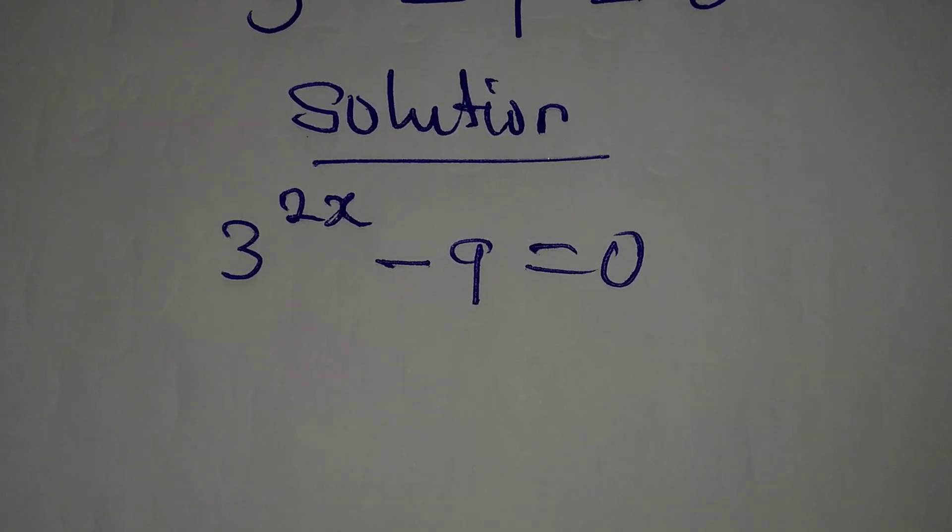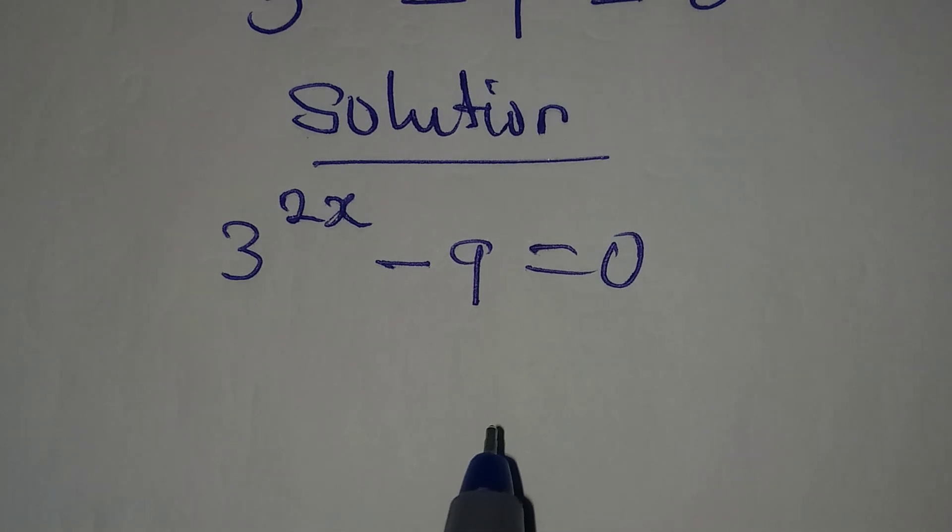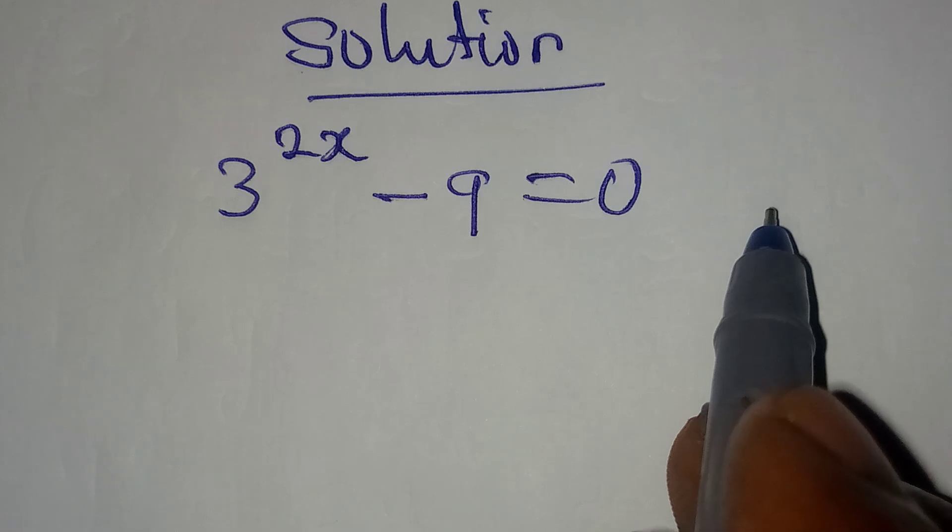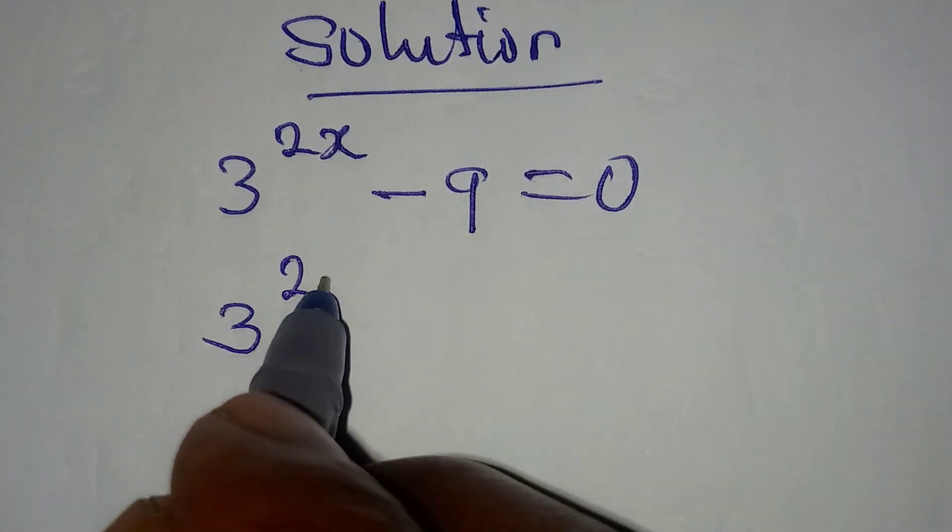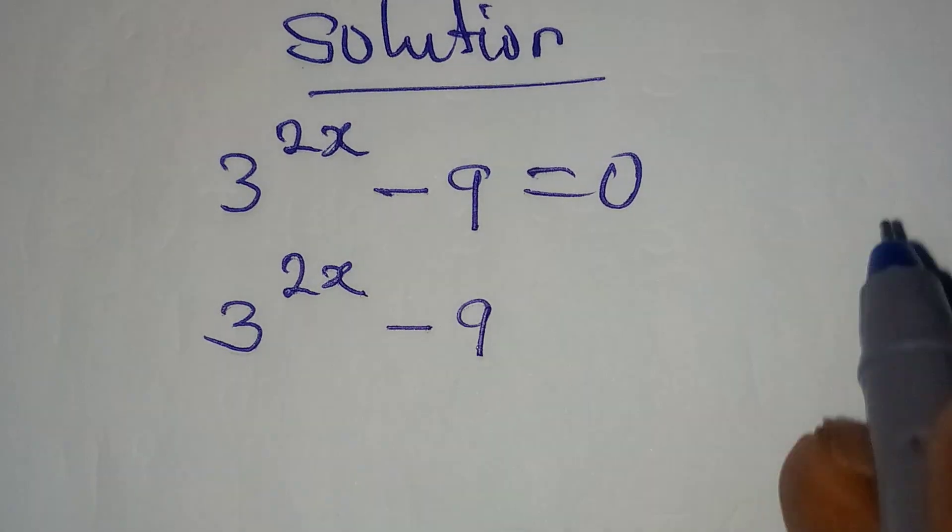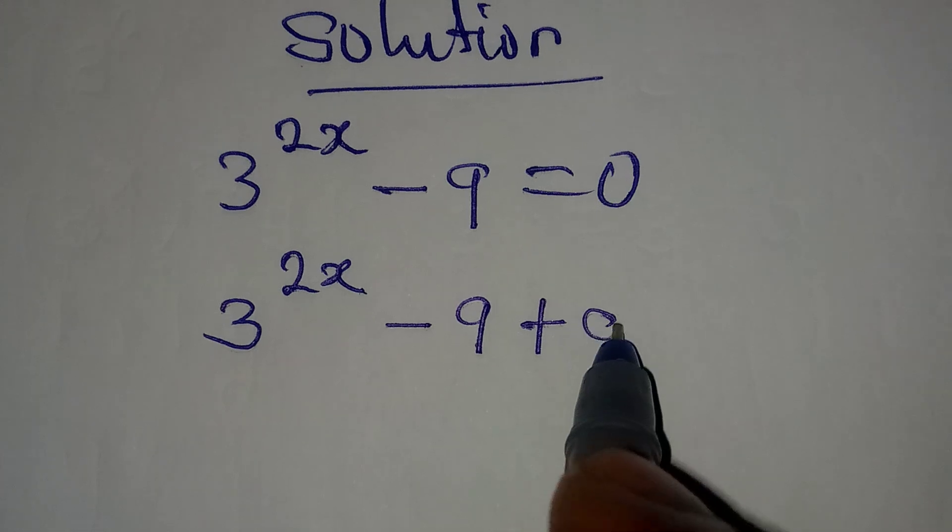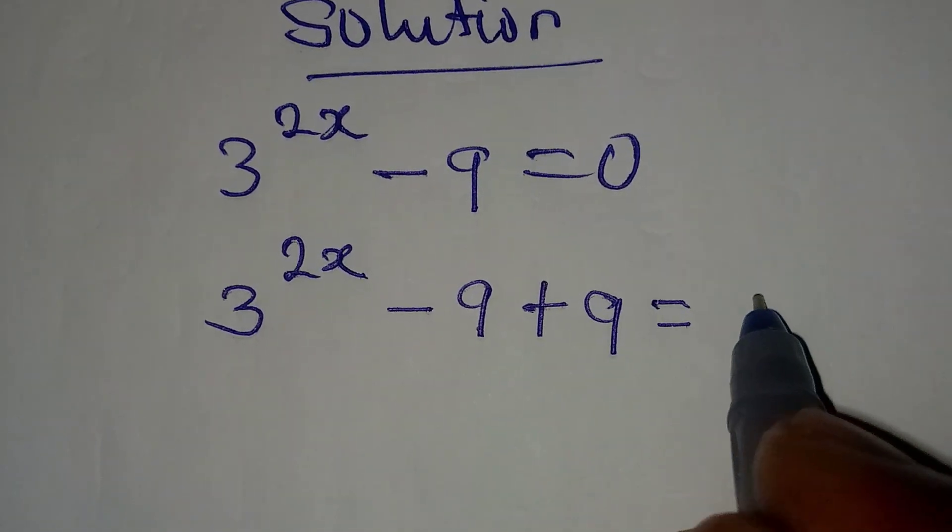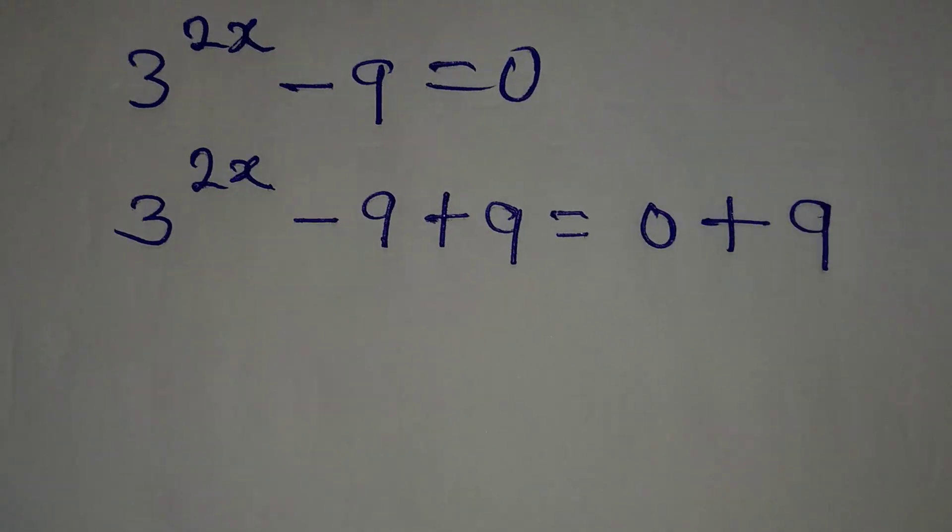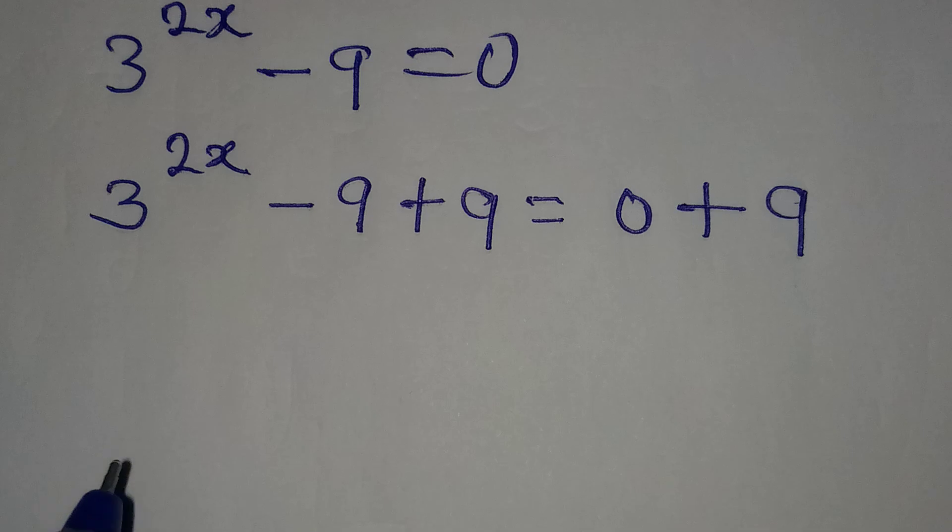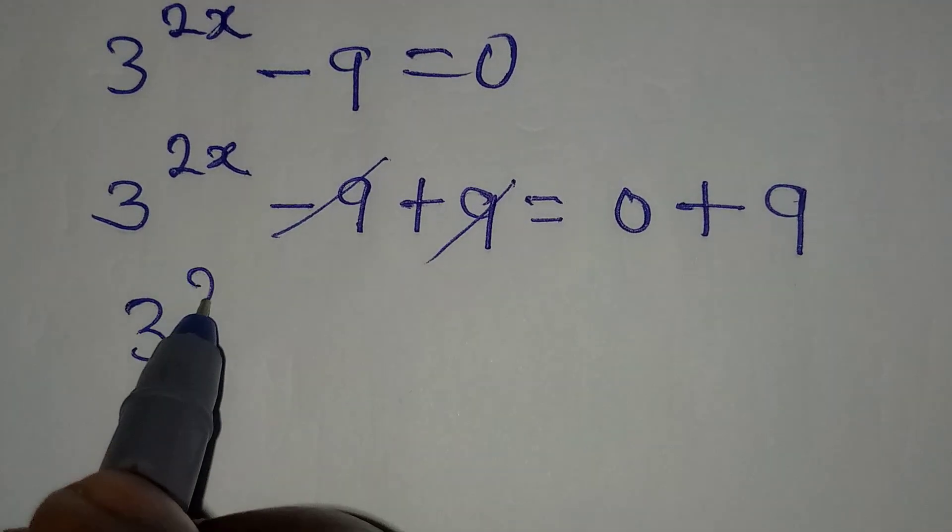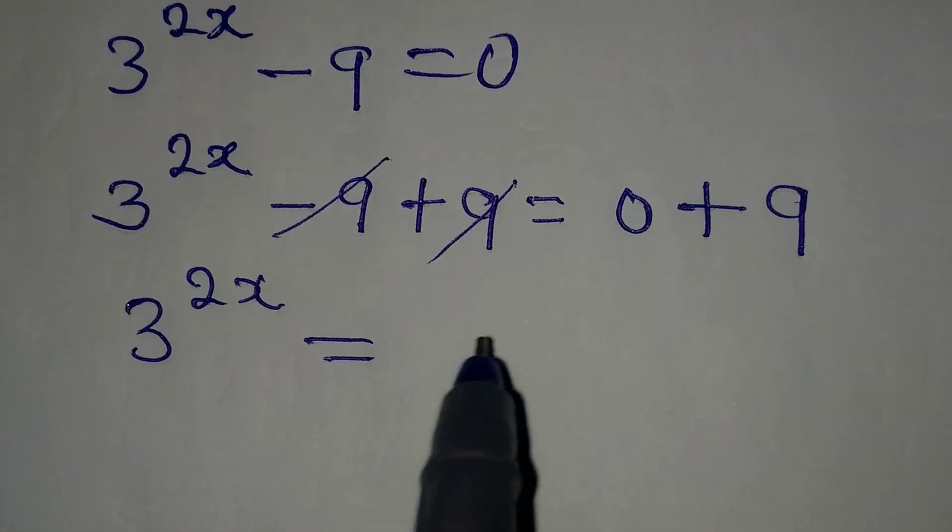But this is simple if only you take the right step. The first thing is take this to the other side, so we are having 3 to the power of 2x minus 9. Since I'm taking it to the other side I will add the additive inverse, so this will be equal to 0 plus 9. This will now be 3 to the power of 2x equal to 9.